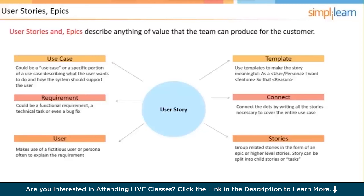User stories are functions or features that the product owner wants developed. A user story turns into working software that provides value to the customer. The product owner is the customer voice and accepts or rejects completed user stories. In the sprint planning meeting - which has two parts - the first part is selecting user stories to be included in the sprint, and the second part is disaggregating each of those user stories into tasks. Those tasks are then actually done when the work of the sprint begins.